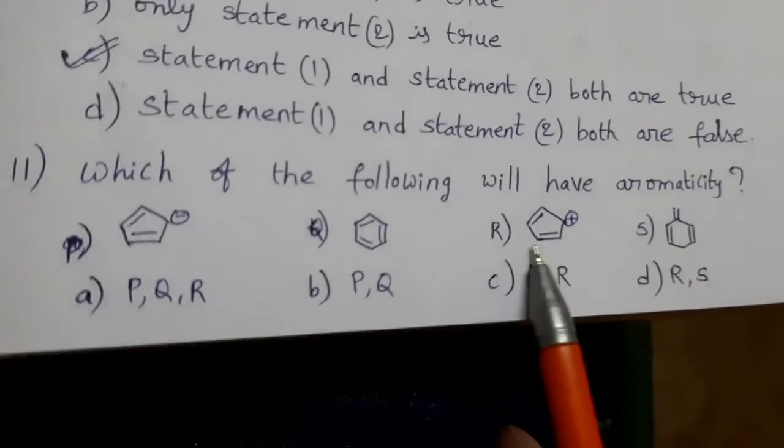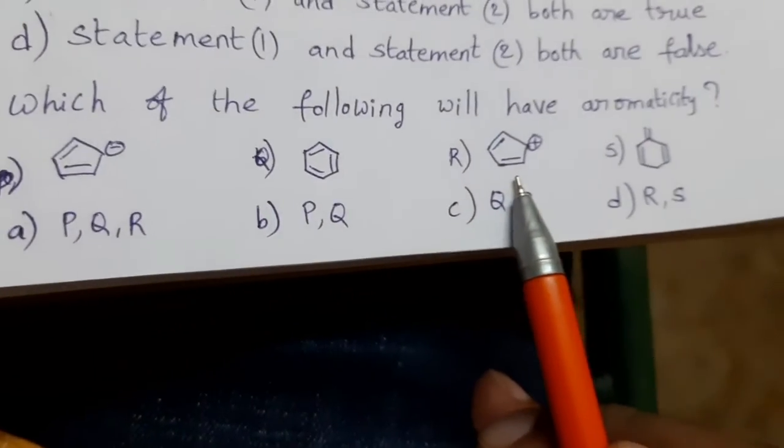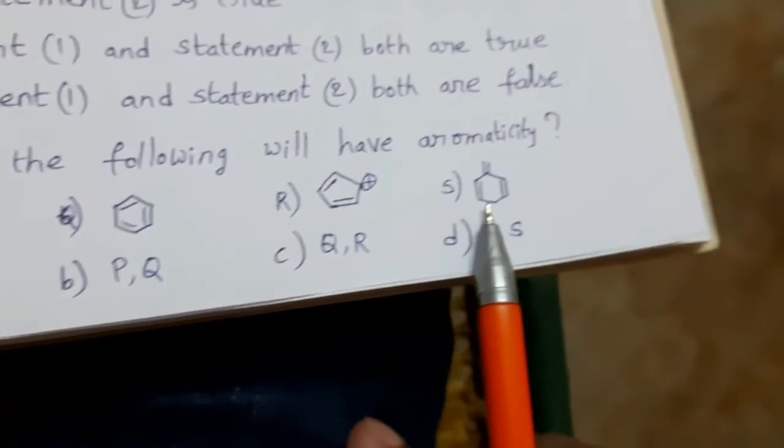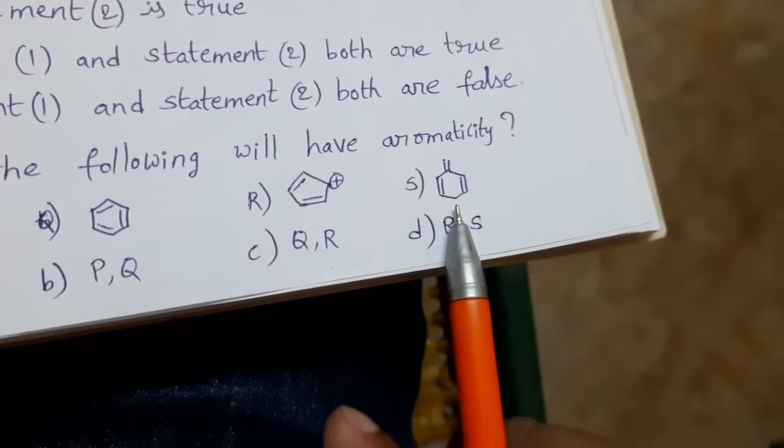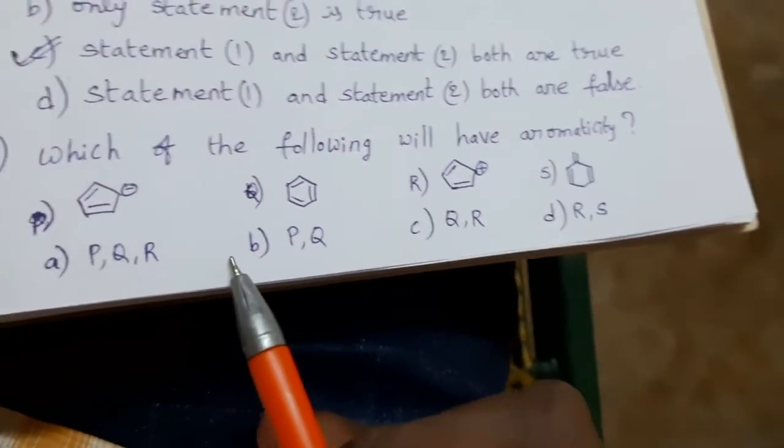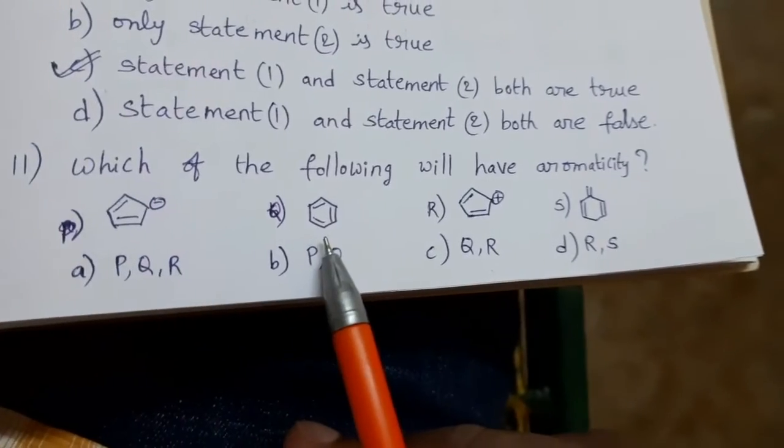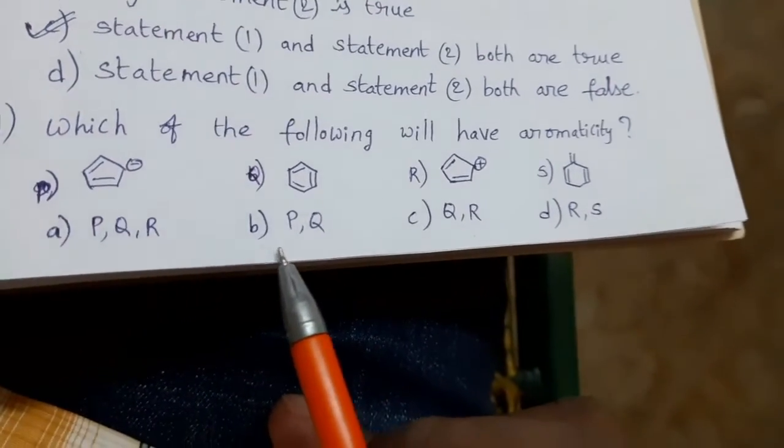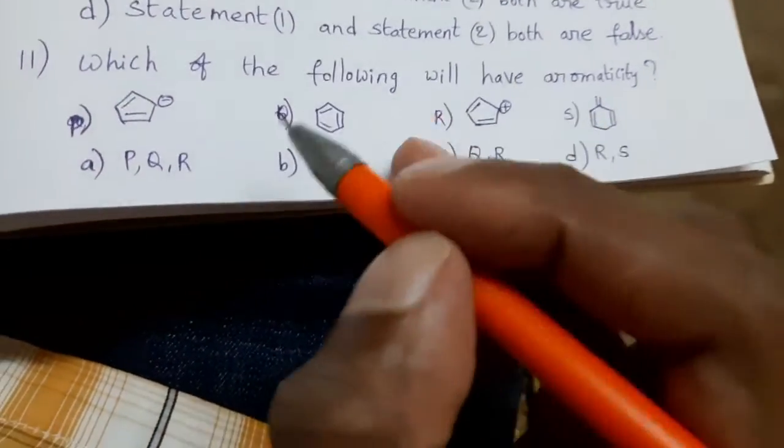Next, it is not aromatic, because in this only 4 pi electrons are there. It is also not aromatic. So finally, what is the option? P and Q are aromatic. Option B is the answer. This one.